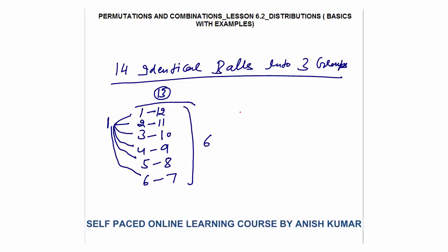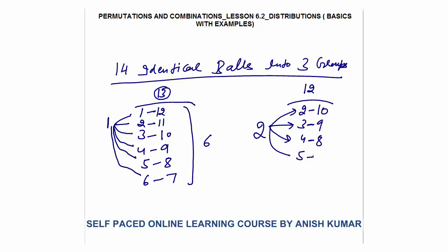First: put 1 ball at one place. Remaining are 13. How can 13 be divided into 2 parts (each ≥ 1)? That is: 1,12; 2,11; 3,10; 4,9; 5,8; 6,7. These are 6 cases. Now all cases with 1 are counted, so 1 will not come again. Numbers will be 2 or more. Put 2 at one place; remaining are 12. Cases: 2,10; 3,9; 4,8; 5,7; 6,6 — that is 5 more ways.